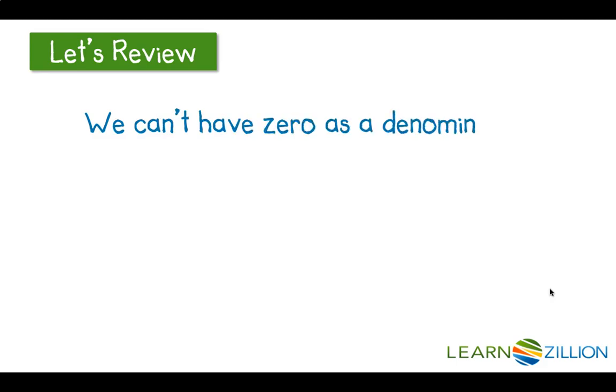It's also important to remember that we can't have 0 as a denominator. For example, we couldn't have 5 over 0 because that leaves us with an undefined number. We're going to need to keep that in mind, especially as we have unknown variables in the denominator.